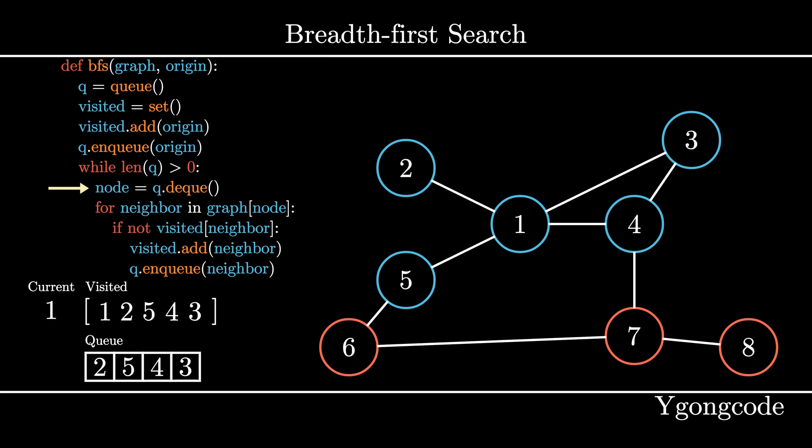Now that we have finished pushing all the neighbors of 1 into the queue, we can proceed to pop the next node of the queue, which is 2, and start searching for its neighbors. Since 2 only has one neighbor and it has been visited, we move on to the next node in the queue, which is 5.